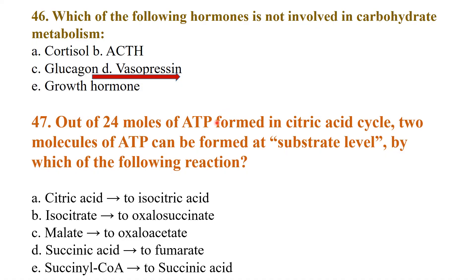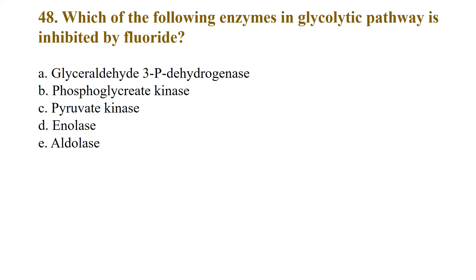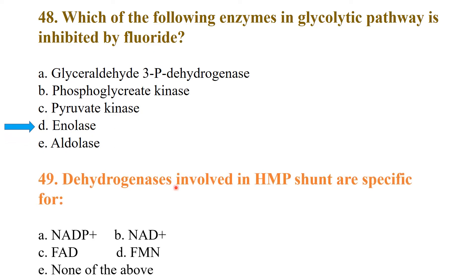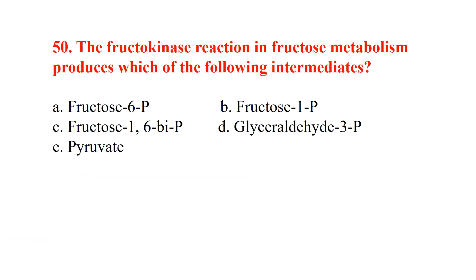Out of 24 moles of ATP formed in the citric acid cycle, 2 molecules of ATP can be formed at substrate level by the reaction of succinyl coenzyme A to succinic acid. Which enzyme in the glycolytic pathway is inhibited by fluoride? The answer is enolase. The dehydrogenase involved in the HMP shunt is specific for NADP+. The fructokinase reaction in fructose metabolism produces fructose-1-phosphate as an intermediate.